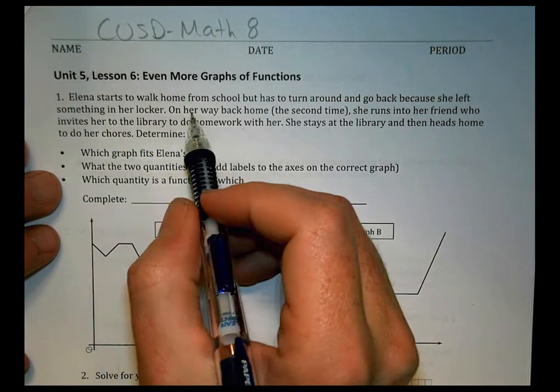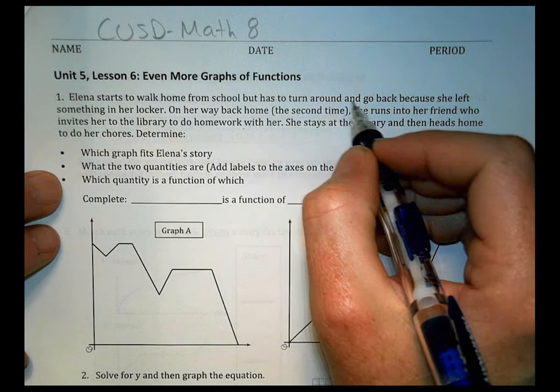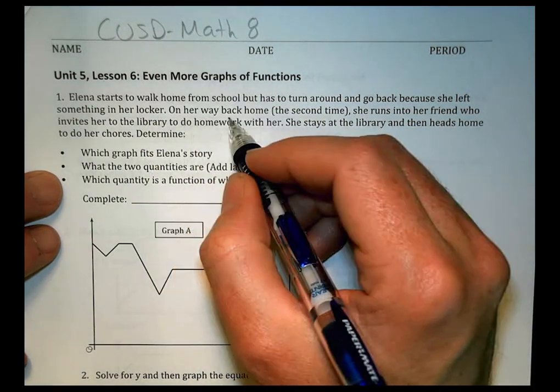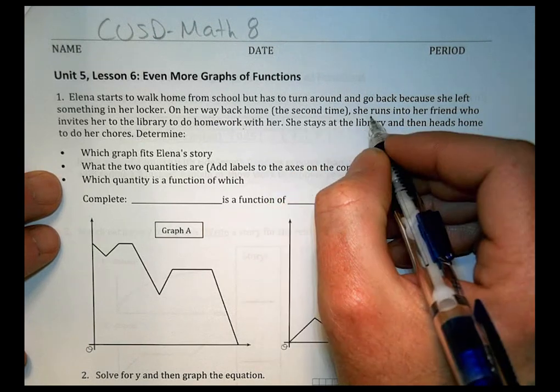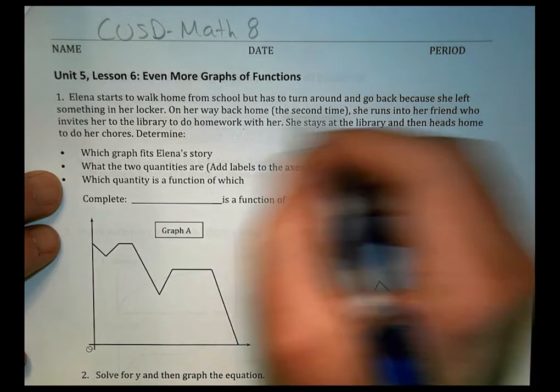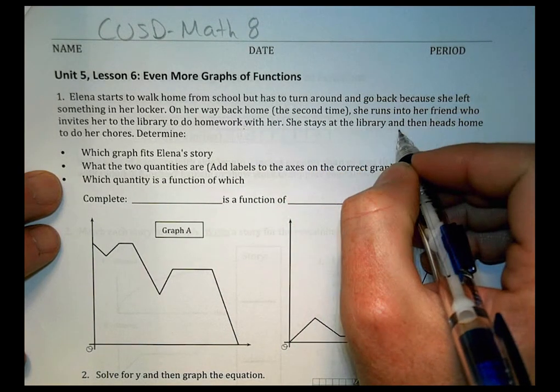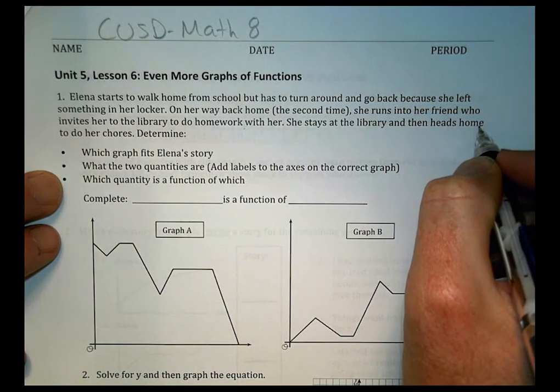It says, first of all, Elena starts to walk home from school, but has to turn around and go back because she left something in her locker. On her way back home, the second time, she runs into her friend who invites her to the library to do homework with her. She stays at the library and then heads home to do her chores.